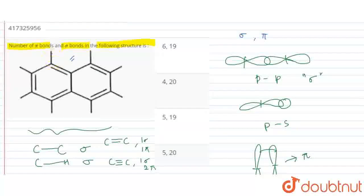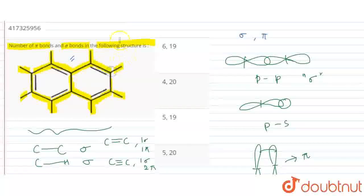So first we will give sigma bonds. Sigma bonds we are using yellow. One, two, three, four, five, six, seven, and eight. Above that, nine, ten, eleven, twelve, thirteen, fourteen, fifteen, sixteen, seventeen, eighteen, and nineteen.